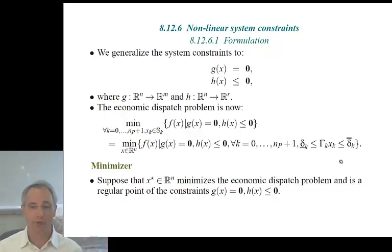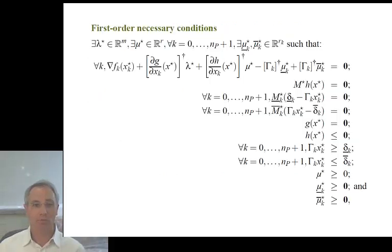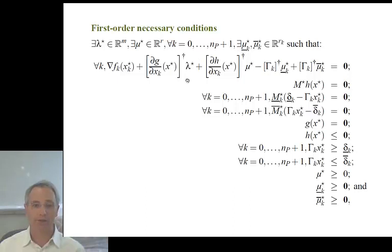The economic dispatch problem is now minimized by our objective over the potentially non-linear system equality and inequality constraints: G(x) equal to zero, H(x) less than or equal to zero. We'll still continue to assume that our generator constraints are linear.